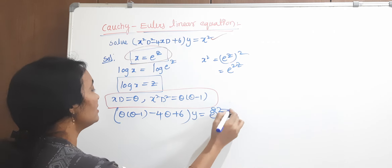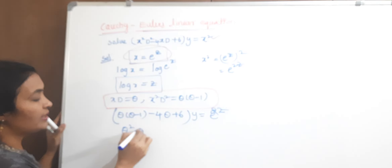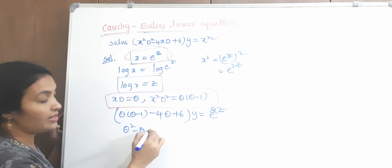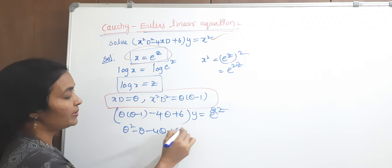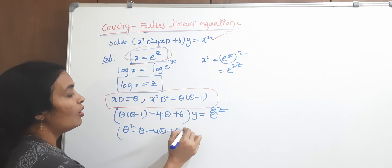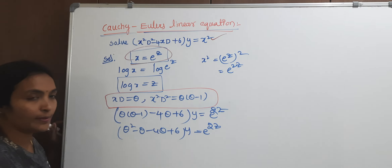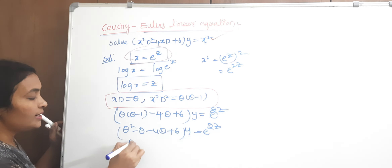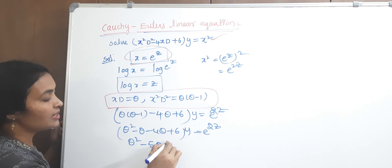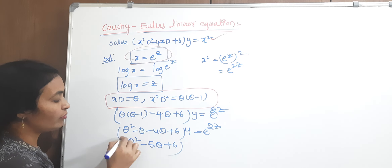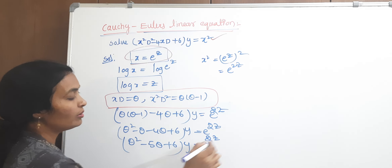Simplifying: theta squared minus theta minus 4·theta plus 6 of y equals e to the power of 2z, which gives theta squared minus 5·theta plus 6 of y equals e to the power of 2z.